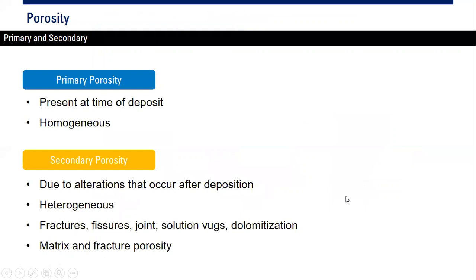Based on origin, porosity is divided into two categories. Primary porosity is present at the time of deposition — thousands or millions of years ago — and is usually quite homogeneous. Secondary porosity is generated due to alterations that occur after deposition, and it is usually heterogeneous.